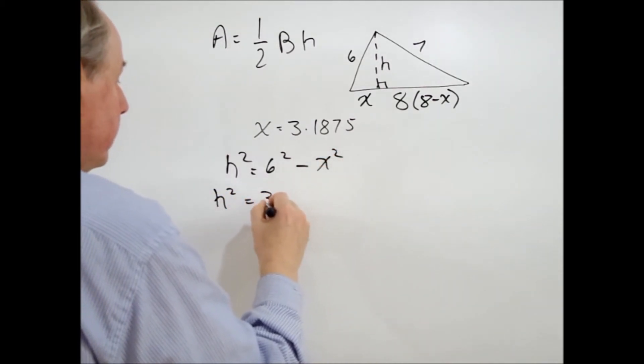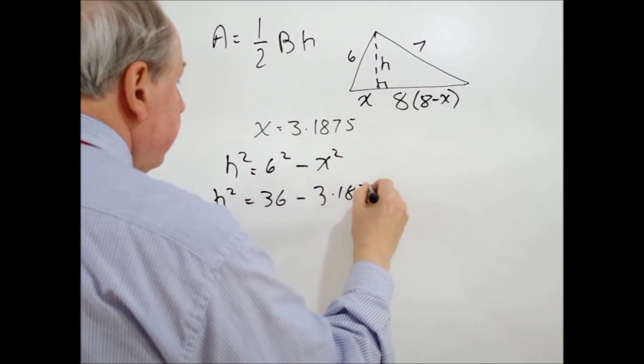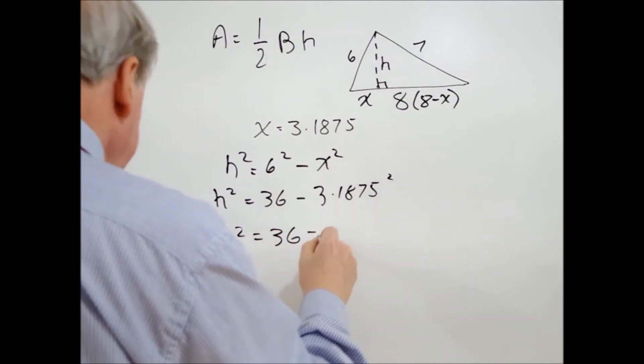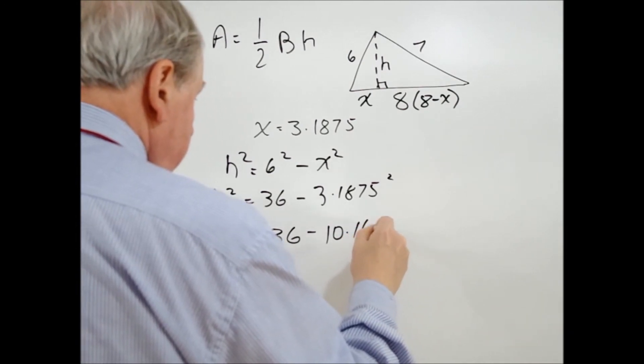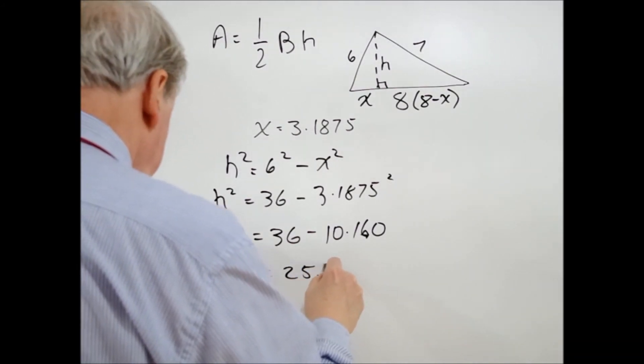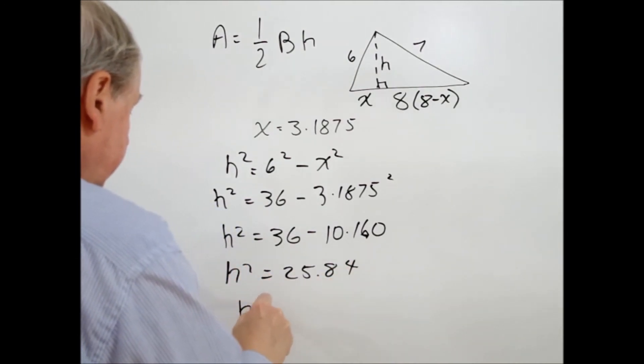Continuing on, it's equal to 36 minus 3.1875 squared. So let's work that out in the calculator. H squared equals 36 minus 10.160. And doing that math, 36 minus 10.16 equals 25.84. And that's the H squared, so H is equal to square root of that, which is 5.083.